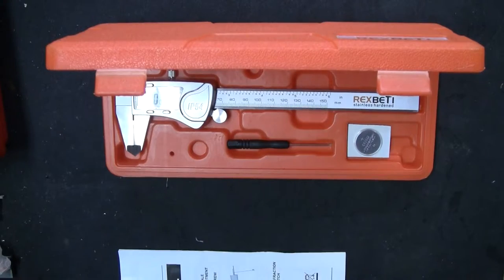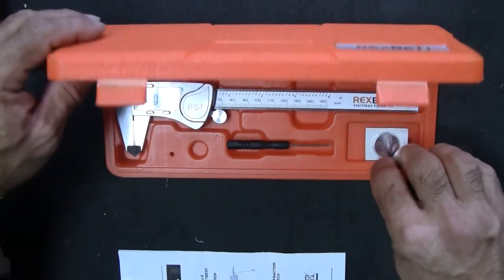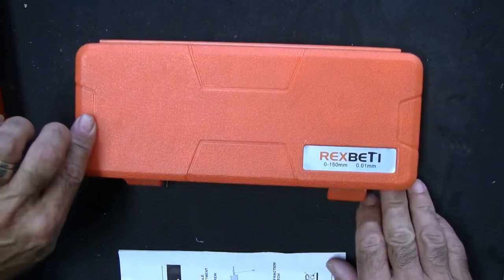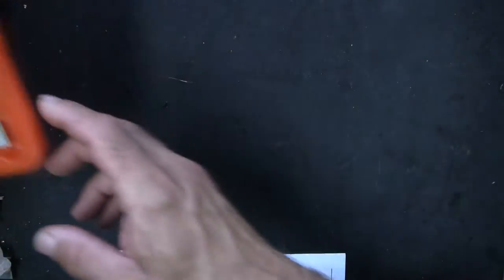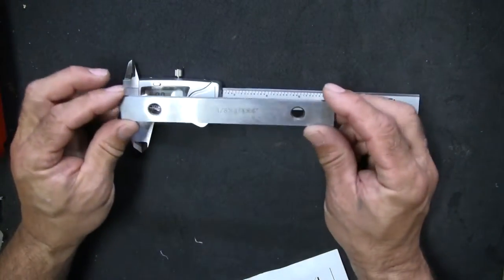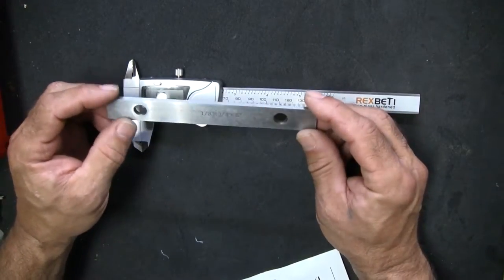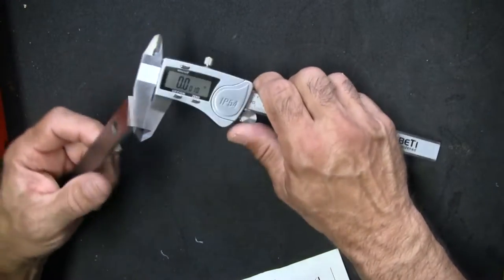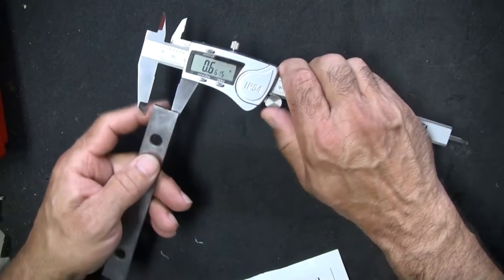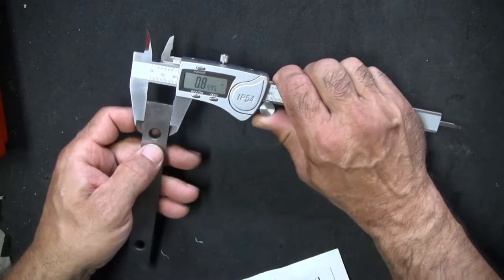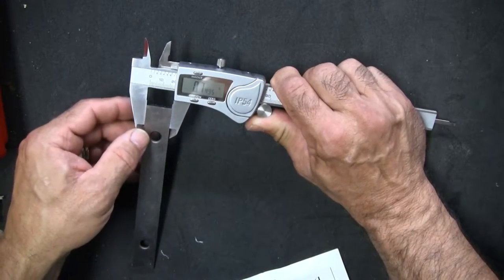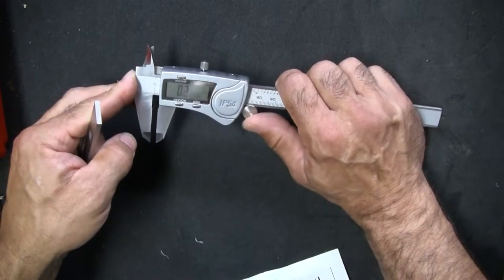So here's the Rex Betty. What I'm going to do is I'm just going to put this plastic case that it comes in, which is pretty convenient, out of the way. Here is a machinist parallel, it's three-quarters of an inch. Just to do a quick measurement here, let's see how this comes up. Point seven four nine five.